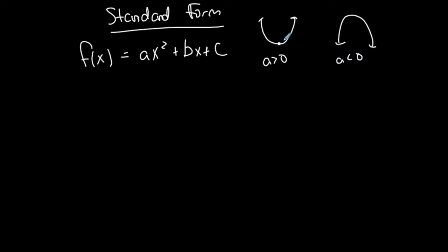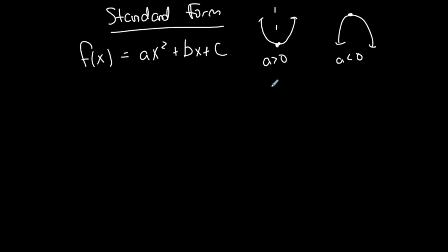These low points and high points are called vertices. If it's a low point, it's a minimum. The axis of symmetry is also that vertical line that goes through the vertex — the same as the other case. It's just that now we're starting in a different form.